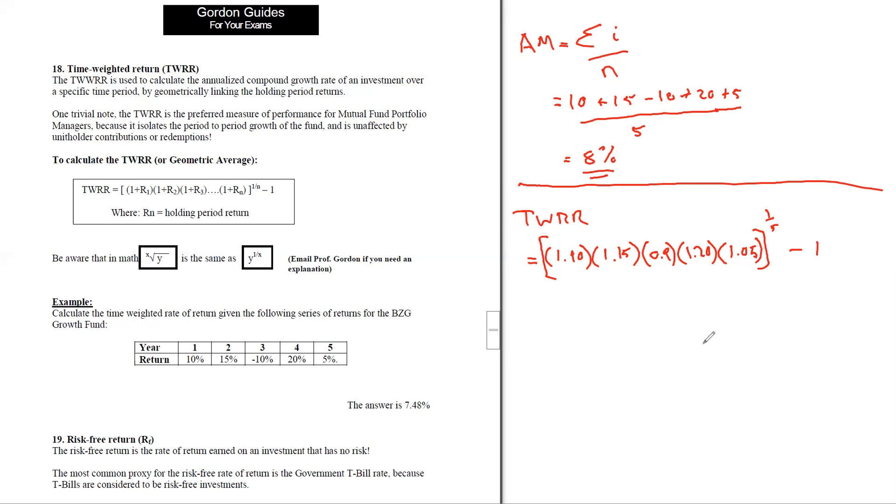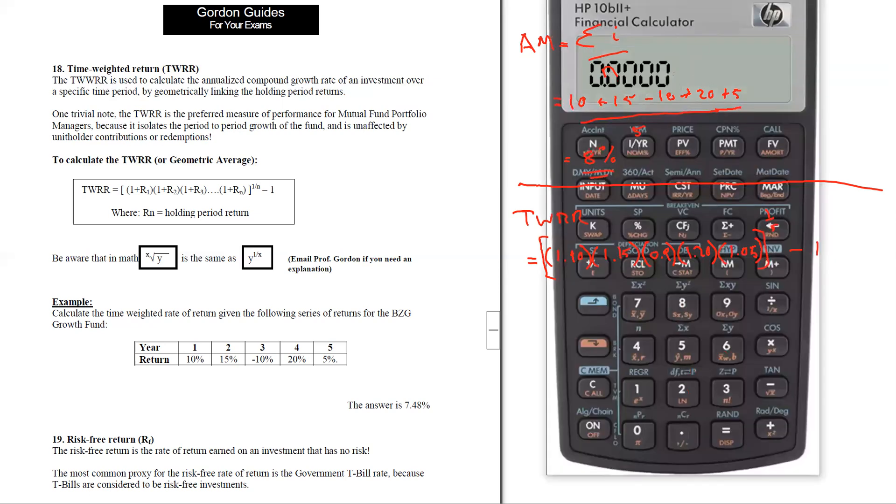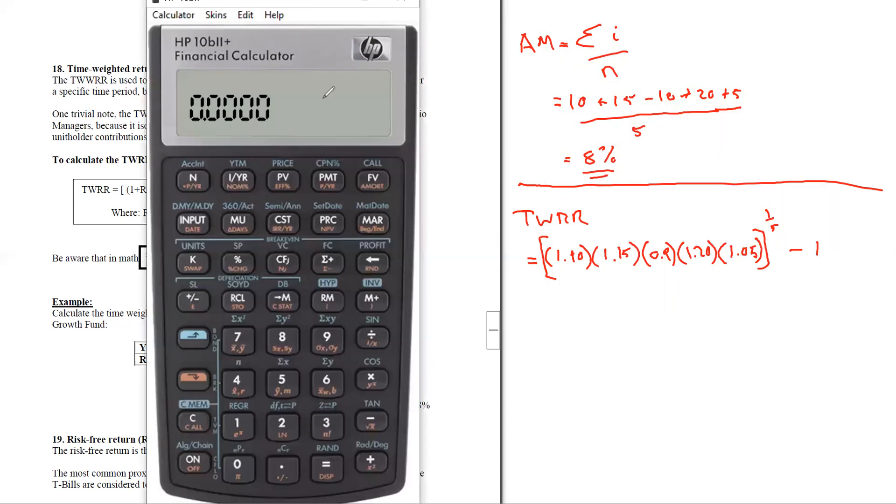Now how do we do this on our calculator? Let's just grab our calculator here and we'll move this over so we can see it. Here's the HP 10b 2 plus. Let's now identify the keys that we're going to be using. Right down here underneath the multiplication sign is the y to the x button. We're going to be using that y to the x button to get the exponent in our formula.